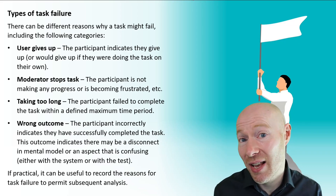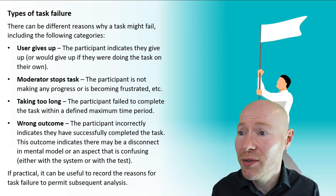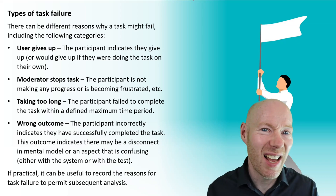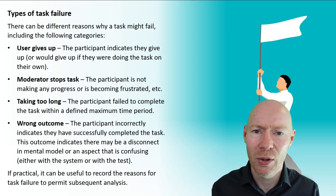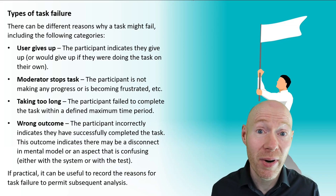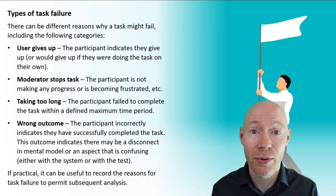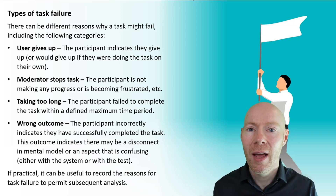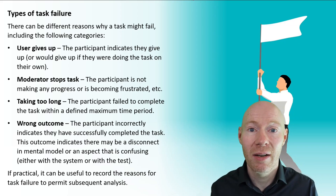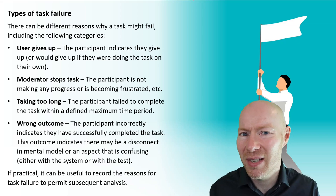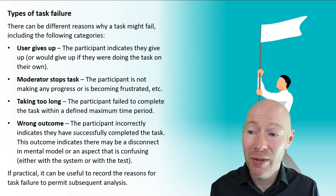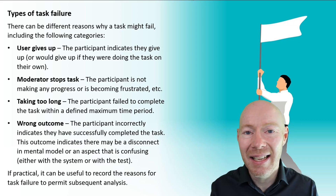Here are some common reasons why a task may fail. The first is that the user gives up — they indicate that, if doing the task on their own, they would have stopped; they don't know what to do. Alternatively, the moderator may stop the task if the user is getting confused and can't find things. You may also define a maximum duration, and if you go beyond that, it counts as a task failure.